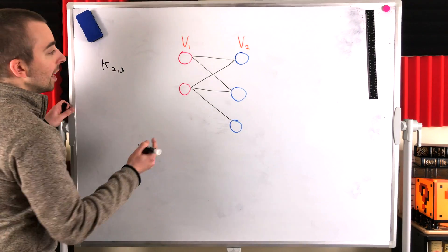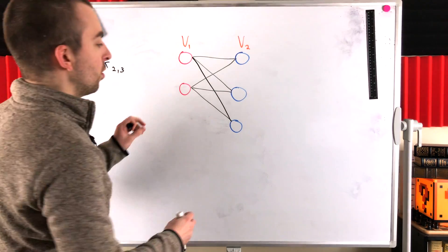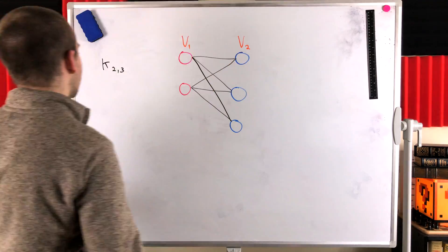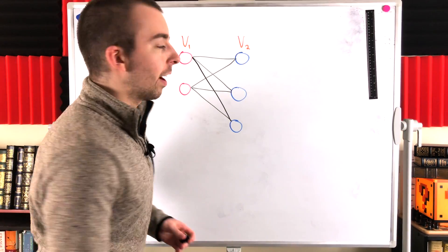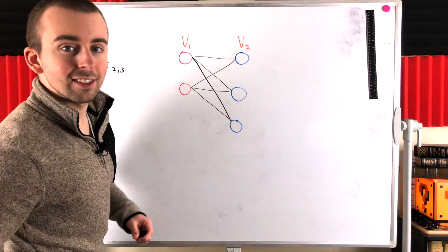we could call this K two, three, it's a bipartite graph, but with every possible edge. So if two vertices are in different partite sets, they've got to be adjacent. You can see how this notation borrows from normal complete graphs, but it tells us the cardinality of the two partite sets, which is nice.